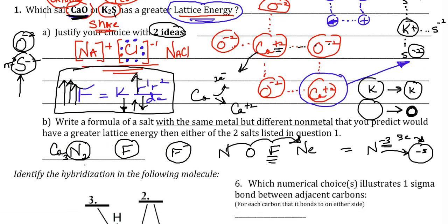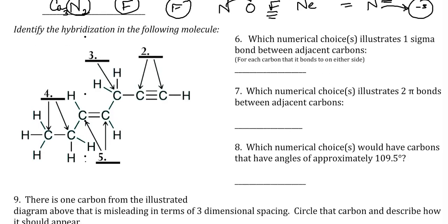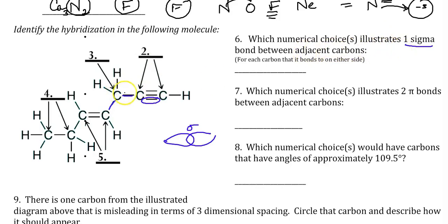Now I'm looking for you to pick out carbons that have one sigma bond. We should know that whether you've got a double, single, or triple bond, the first bond has to be an overlapping bond — that's a sigma bond. So there is one sigma bond between these two carbons. Number 3 has sigma bonds here, so which illustrates one sigma bond between adjacent carbons? All these individual single bonds are sigmas. For a double or triple bond, that next bond beyond the first sigma is a pi.